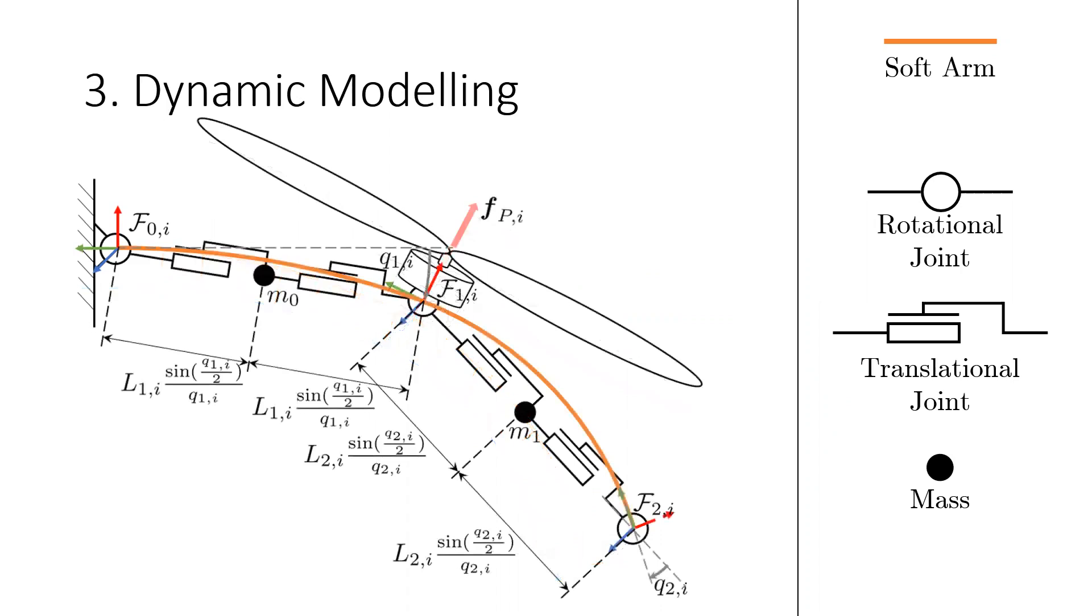To model the soft arms, we utilize the dynamically consistent augmented formulation that represents the soft arm with sufficient accuracy by augmenting every single segment by four conventional joints, consisting of two rotational and two translational joints.